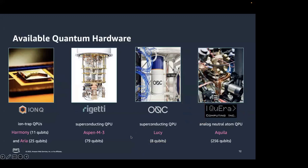Talking about available quantum hardware: we currently have four different hardware options. Two from IonQ — Harmony (11 qubit) and ARIA (25 qubits); one from Rigetti called Aspen M3 (79 qubits); Oxford Quantum Circuit's 8-qubit device called Lucy; and Quera's device called Aquila (256 qubits). The first three are gate-based devices working on gate-based quantum computing, while the Quera device is a neutral atom device that does analog Hamiltonian simulation.